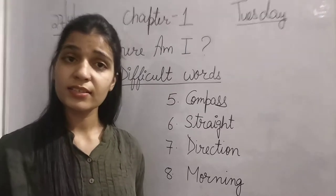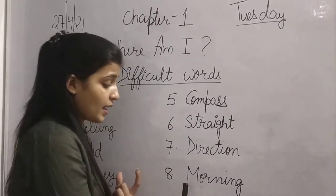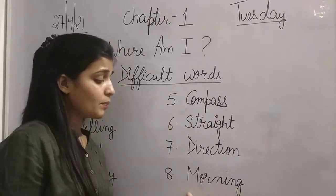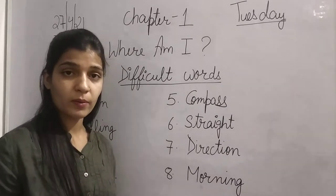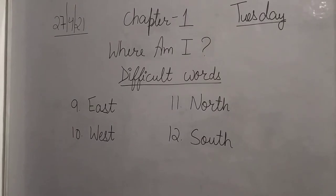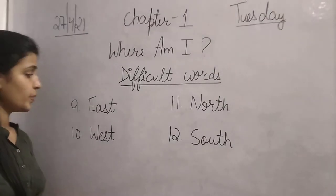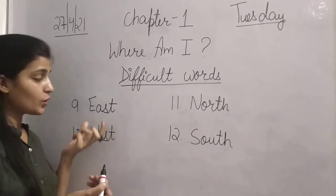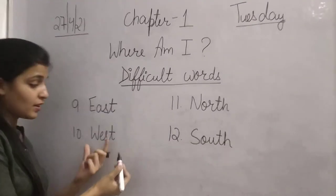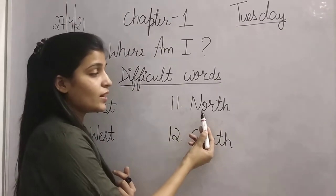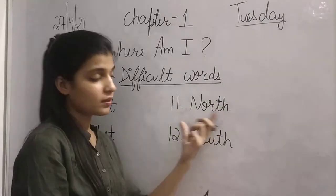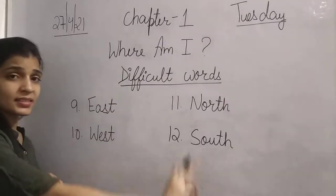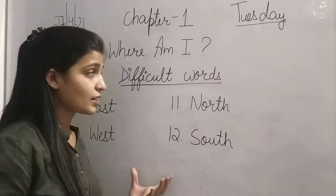There are 4 directions: East, West, North, and South. Morning — everyone knows the meaning of morning. The next word is East — E-A-S-T. This is a direction. West — W-E-S-T. North — N-O-R-T-H. South — S-O-U-T-H. These are all directions. We have studied about directions in our chapter.